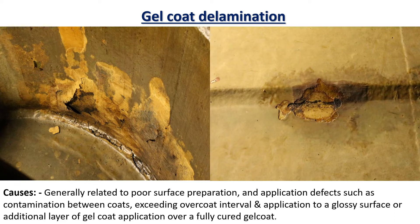For GRE lining, surface preparation is a critical thing. Lack of sufficient surface profile will lead to lack of bonding between the substrate and the lining. Contaminants have a huge role in generating this kind of defect in GRE lining.